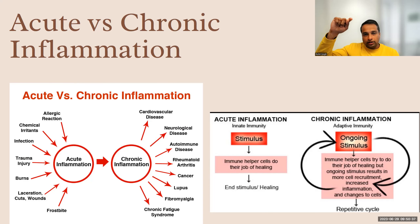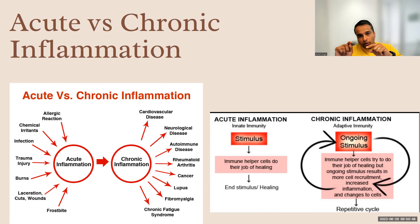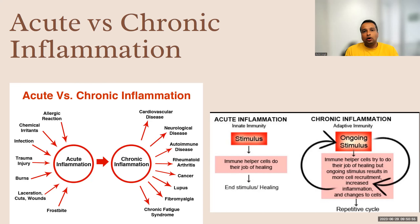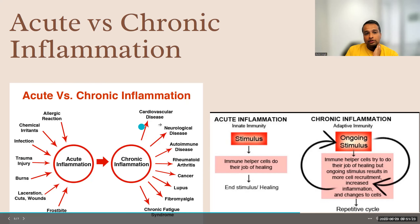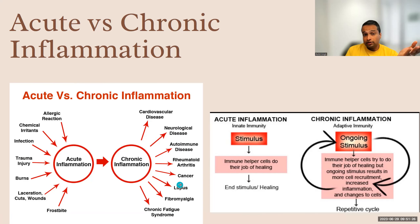In chronic inflammation, the signal keeps going and the cycle keeps repeating. It tries to fight, it inflames, comes back, but it's not resolved — so more and more immune cells keep coming. In the case of cancer, extra cells are being produced in your organ, occupying more space. That stretches the organ, causing your body to think something is wrong and send immune cells to attack that cancer area. So on top of cancer, there's more inflammation. Chronic inflammation is a cause of so many diseases: cardiovascular, neurological, autoimmune, arthritis, and cancer.